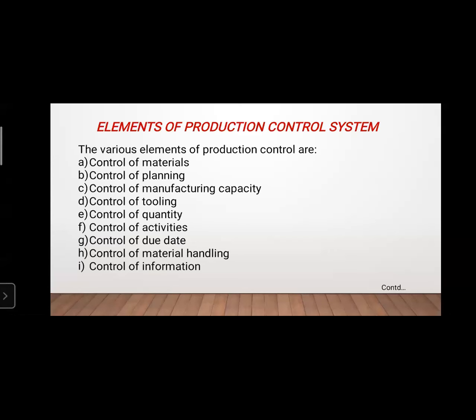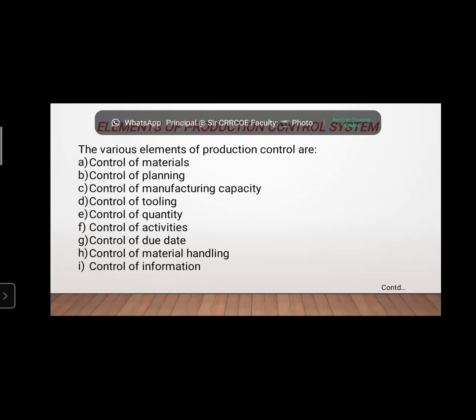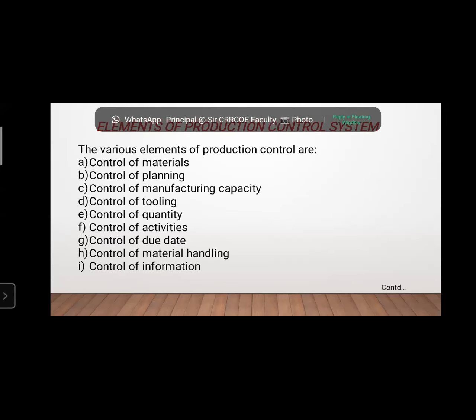These are the elements of the production control system: A — control of material, B — control of planning, C — control of manufacturing capacity, D — control of tooling, E — control of quantity, F — control of activity, G — control of due date, H — control of material handling, I — control of information.